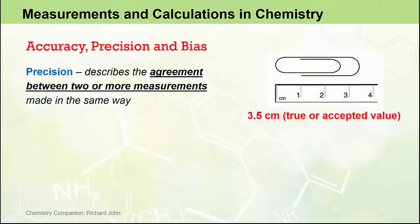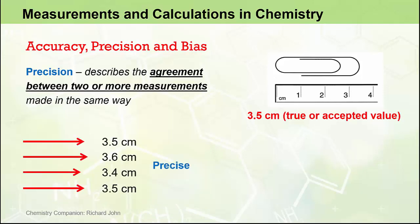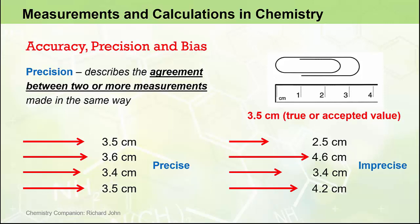If we accept that 3.5 centimeters is the true or accepted value of the length of this paper clip and we perform four measurements and get 3.5 cm, 3.6 cm, 3.4 cm, and 3.5 cm, we would say those measurements are reasonably precise — they all agree with each other to a fairly close level. If however we measured four times and got 2.5 cm, 4.6 cm, 3.4 cm, and 4.2 cm, we would say those measurements are imprecise, even if the average of those values is close to the true or accepted value.